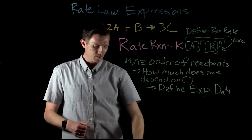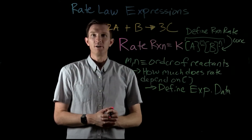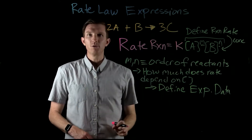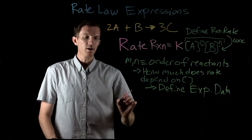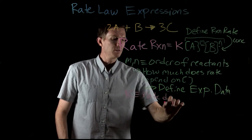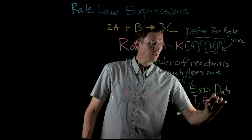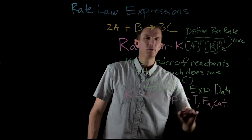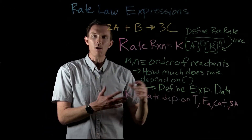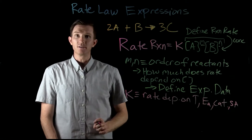Now let's look at the rate constant. We mentioned all the different variables that affect our reaction rate — one of them is concentration. All the other variables are built into our rate constant. Our rate constant tells us the rate's dependence on things like temperature, activation energy, whether or not there's a catalyst, and surface area for a heterogeneous reaction. So all these variables are built into the rate constant value.